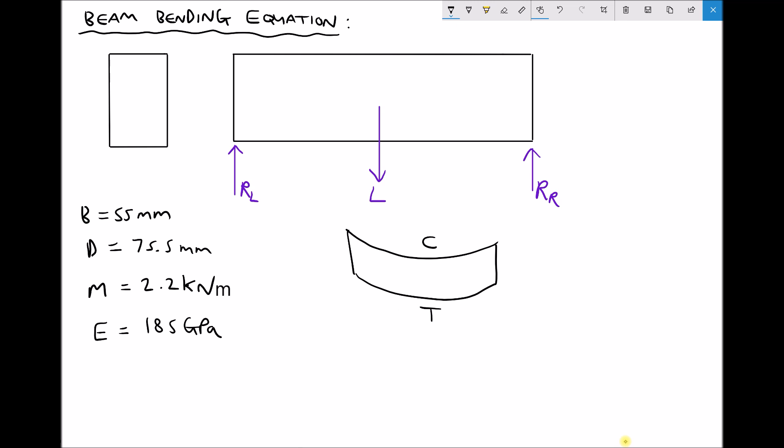In effect, the bottom surface is lengthening, whilst the top surface is shortening. Now what this means is that somewhere in the middle we have a plane or an axis which is neither under tension nor compression. So at the centre of this beam we have what's called the neutral axis. No stress will occur at the neutral axis. We have maximum compression on the top surface and we have maximum tension on the bottom surface.